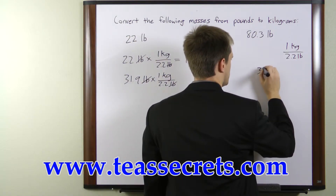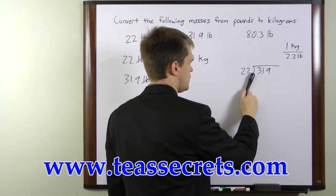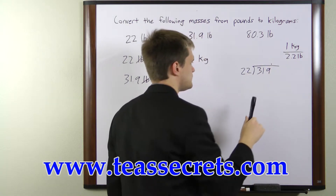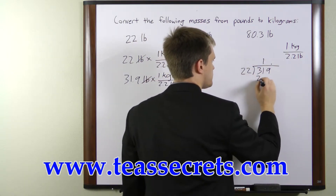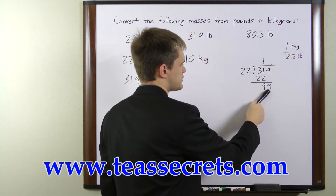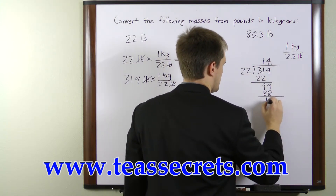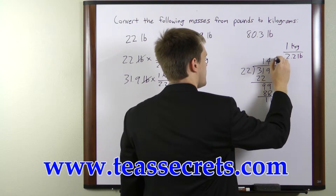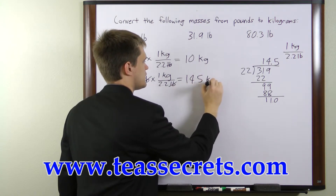So we'll come over here and divide 31.9 by 2.2. We move the decimal point one place to the right in both numbers, so we don't need to move our decimal in the answer. So 22 goes into 31 one time, and that leaves us with 9. We'll add on that other 9 — 22 goes into 99 four times, leaving a remainder of 11. And 22 goes into 110 five times. So what we're left with here is 14.5 kilograms.